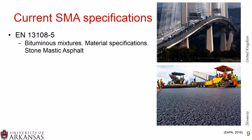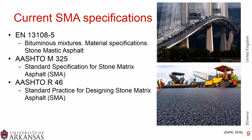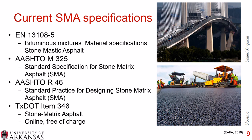Current SMA specifications include EN 13108-5 in Europe, titled Bituminous Mixtures Material Specifications for Stone Mastic Asphalt. In the United States, we have AASHTO M325, the standard specification for stone matrix asphalt, and AASHTO R46, the standard practice for designing SMA. These are behind paywalls, but for a free SMA specification, look at TxDOT's Item 346 for Stone Matrix Asphalt — simply Google SMA TxDOT 346 to download it free of charge.